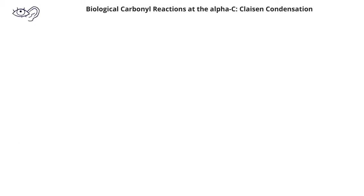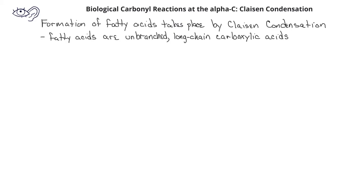An example of a biological Claisen reaction is the formation of long-chain fatty acids. As you'll learn in later videos, fatty acids are unbranched carboxylic acid chains. Most naturally occurring fatty acids contain an even number of carbons because they are synthesized from the two-carbon acetate ion.